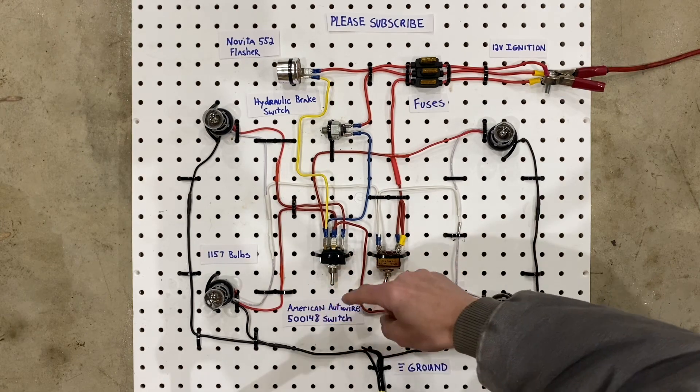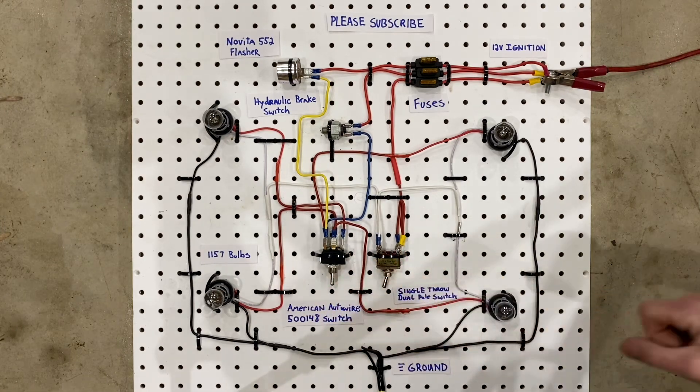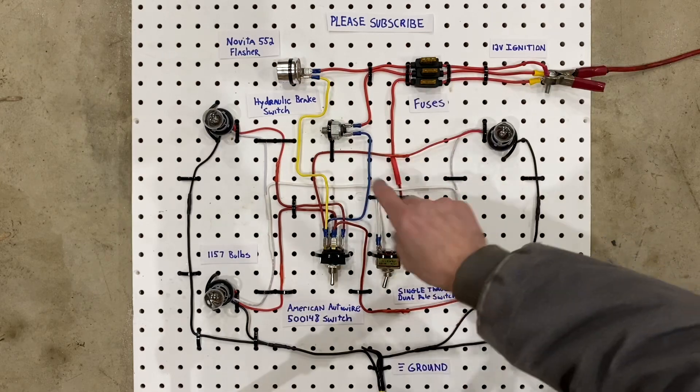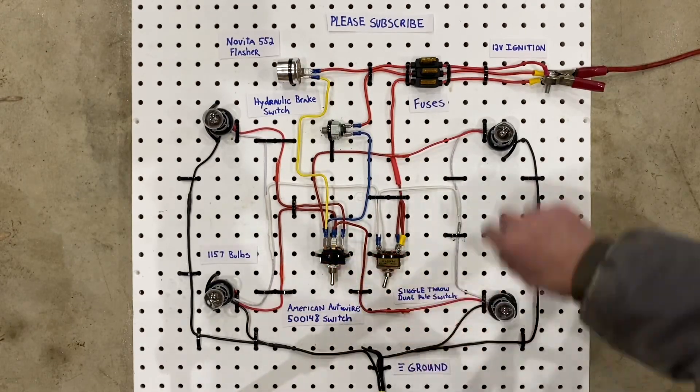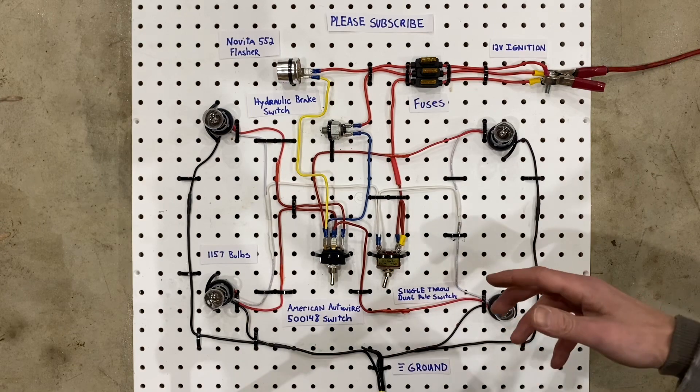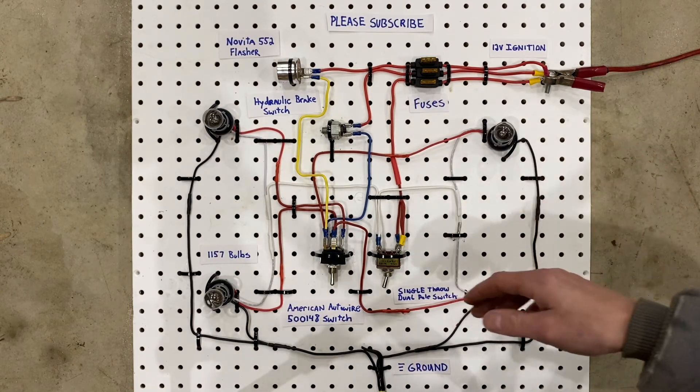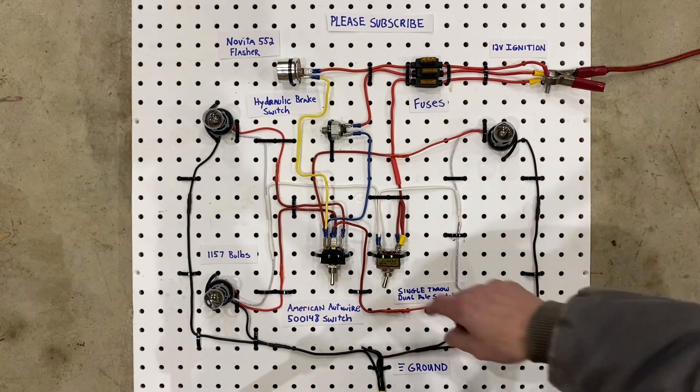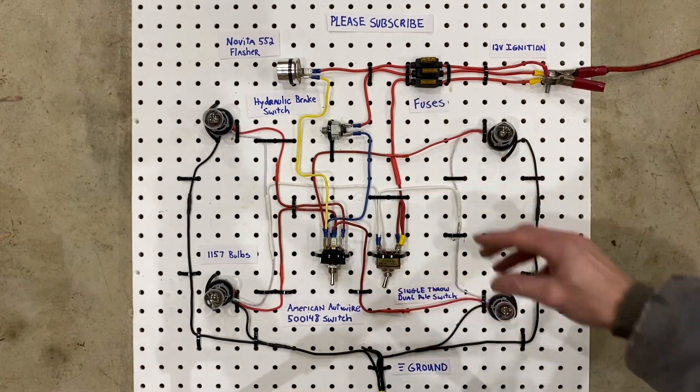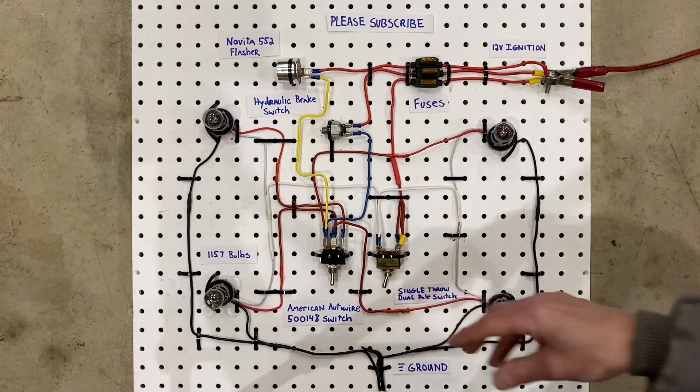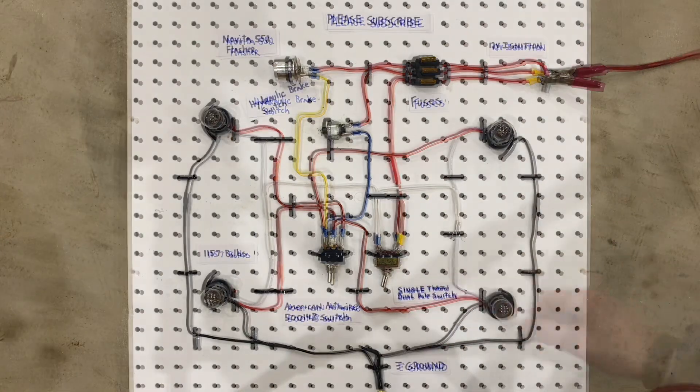The last and most important part of this circuit is the American Auto Wire 500148 switch. All of these components go through this switch, so this switch makes all of this possible. Otherwise, you'd need a big clunky turn signal lever, or you'd need some relays, or a variety of other things. This switch simplifies all of this and makes the brakes and the turn signals and the parking lights possible.